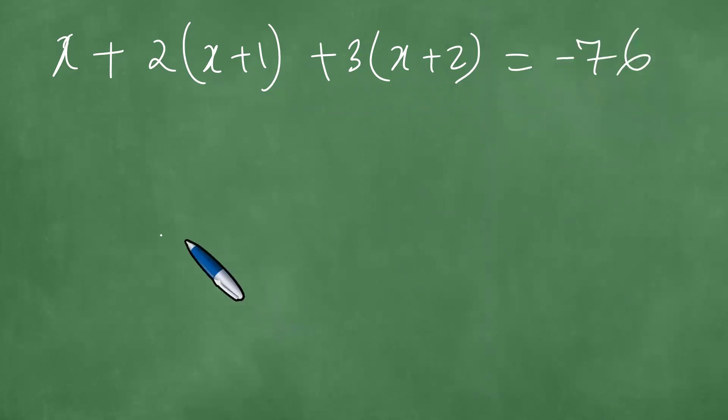This means you have x plus two times x plus one plus three times x plus two equals minus 76.